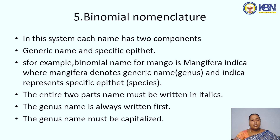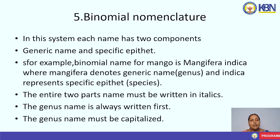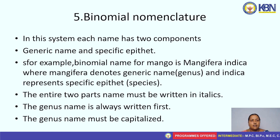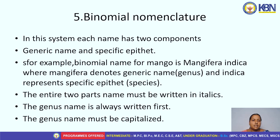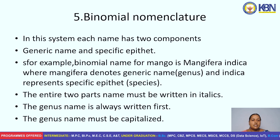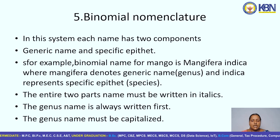Another topic is binomial nomenclature. In this system, each name has two components: generic name and specific epithet. For example, the binomial name for mango is Mangifera indica, where Mangifera denotes the generic name, that is genus, and indica represents the specific epithet, that is species name. The entire two-part name must be written in italics. The genus name is always written first and must be capitalized.